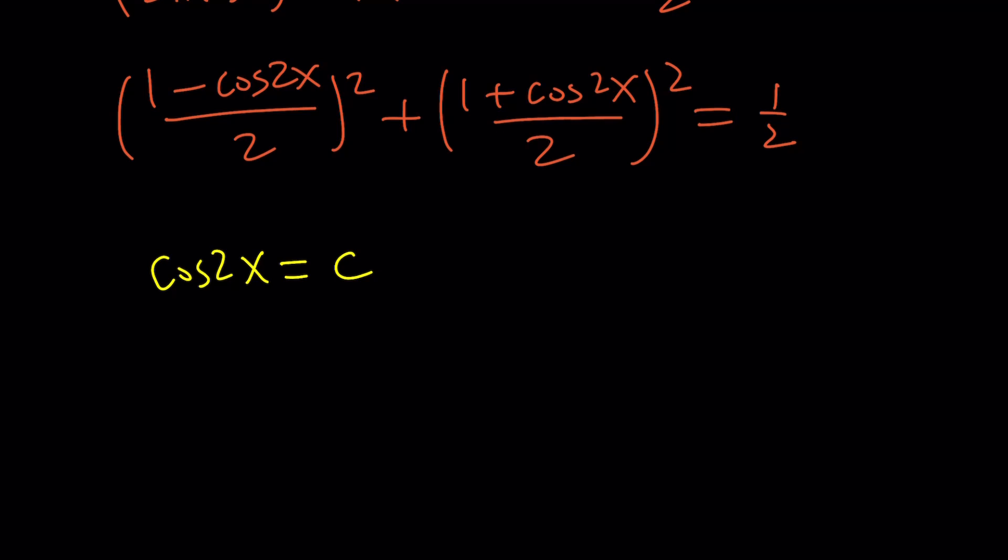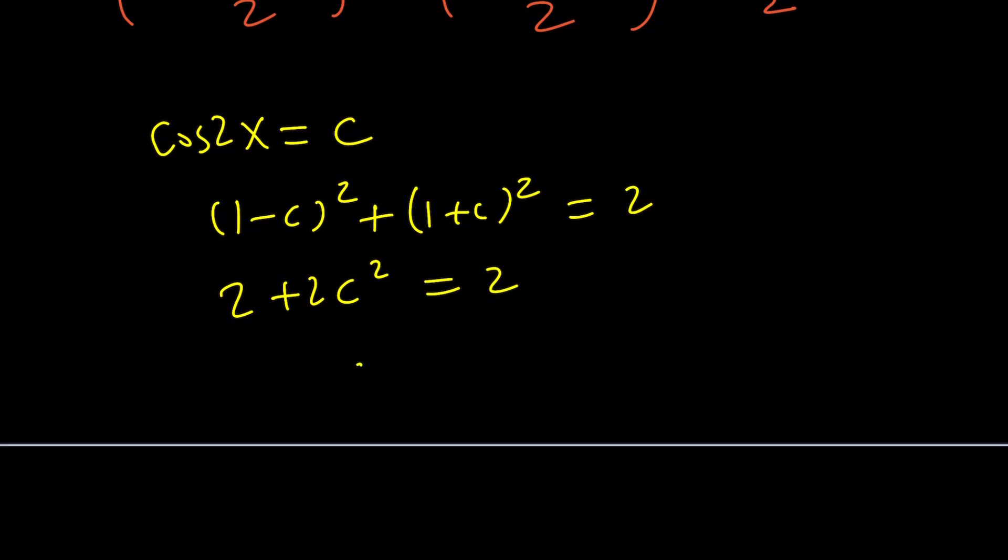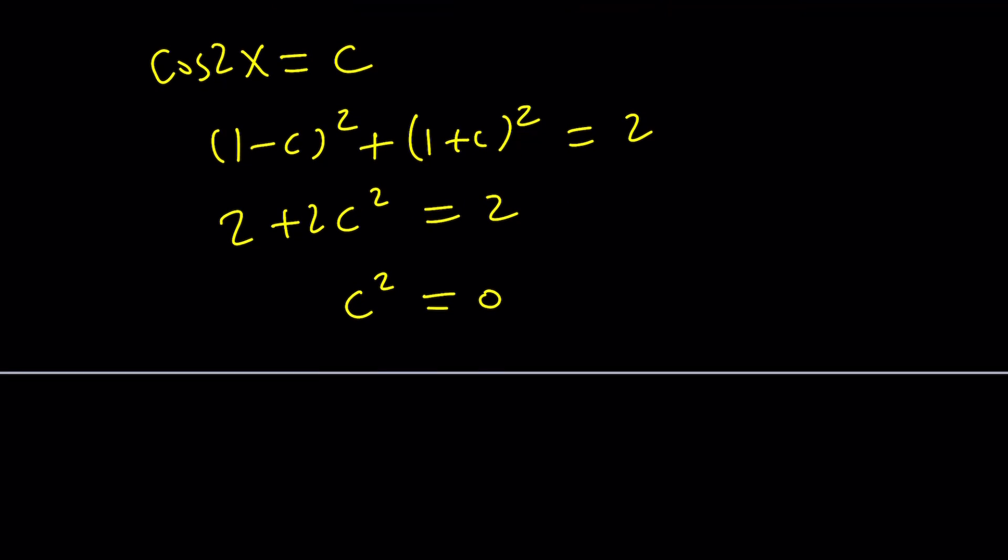So our equation is going to look like this. One minus C squared plus one plus C squared. And now we're going to get a four at the bottom. Multiply both sides by four, and you're going to get a two. Let's go ahead and expand it. Obviously, the terms in the middle are going to cancel out, leaving us with two plus two C squared equals two, which means C squared equals zero. This is nice because zero is easy to handle. Cosine squared 2x, but it just means that C is zero because C squared cannot be zero without C being zero.